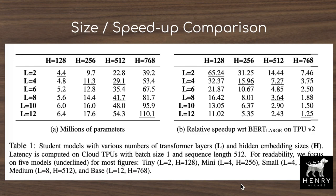Coming back to the central motivation: we're looking for compact student models that retain the performance of the larger teacher network but have a much lower parameter count and run inference much faster. With BERT-base being 12 layers and 768 hidden dimension, reducing to six layers and 256 hidden dimension yields 12.8 million parameters compared to the original 110 million, and the model makes predictions significantly faster.